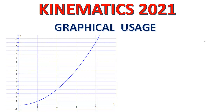Consider a graph where displacement is on the y-axis and time is on the x-axis — this is a displacement versus time graph. The line in this graph is not a straight line, which simply means the slope is varying every time. Slope means y divided by x, that is displacement divided by time, which you know is called velocity. Since the line is not straight, velocity is varying — it is not constant.